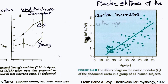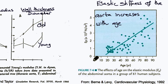Here's data as a function of age in humans, and you can see that the elastic modulus of the abdominal aorta increases four to five fold over about seven decades.